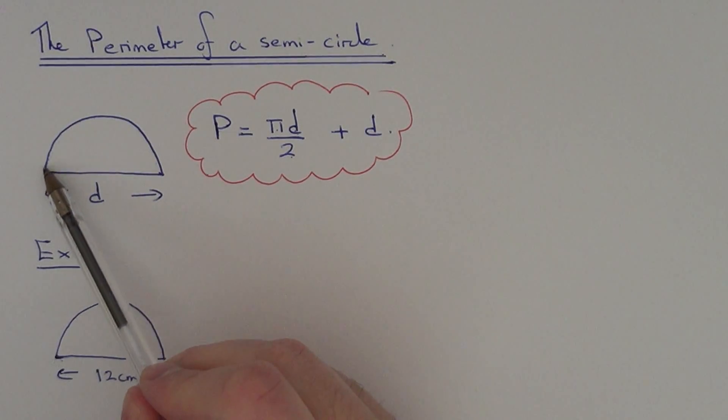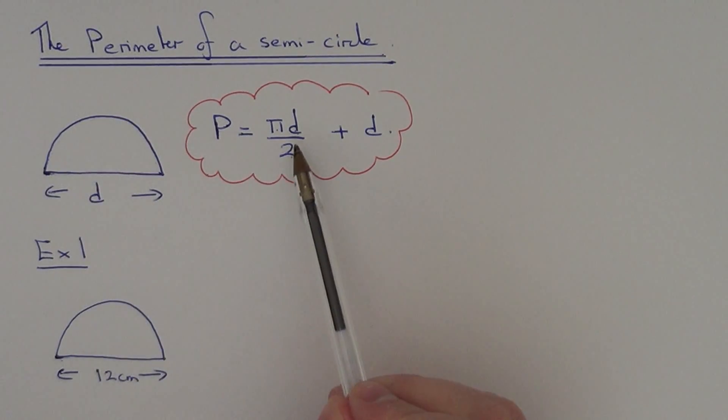The perimeter of a semicircle may be worked out using the formula: the perimeter equals pi times diameter divided by 2 plus your diameter.